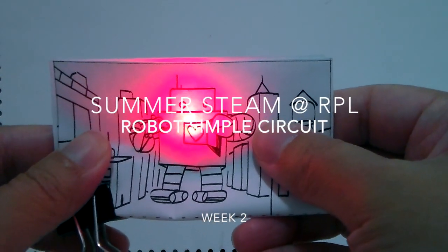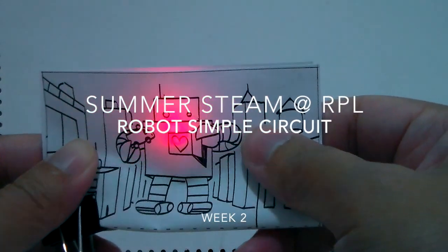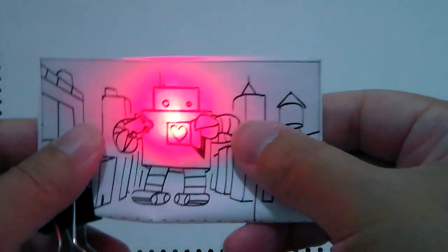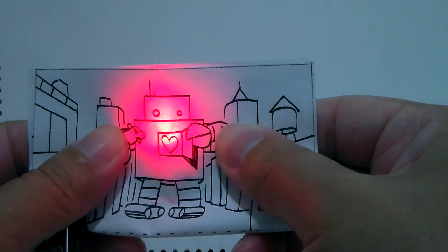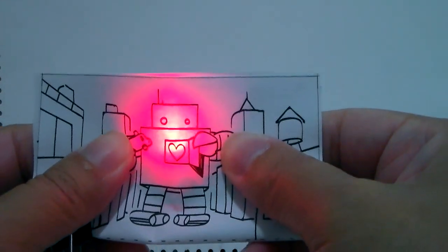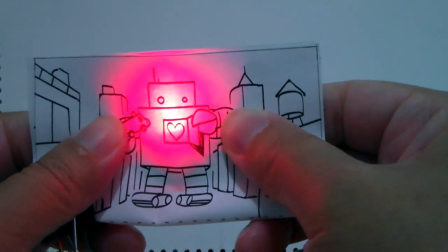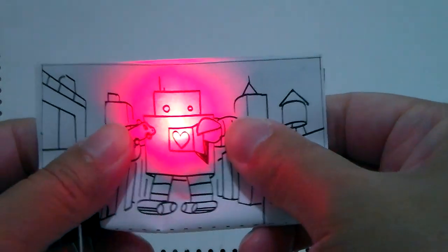Hello everybody, welcome back to RPL Youth Service YouTube channel or Instagram TV. So today's project, we're going to make this robot mini simple circuit. It's a paper circuit that goes into your to-go packs. And if you want to know how to make it, stay tuned, let's get started.